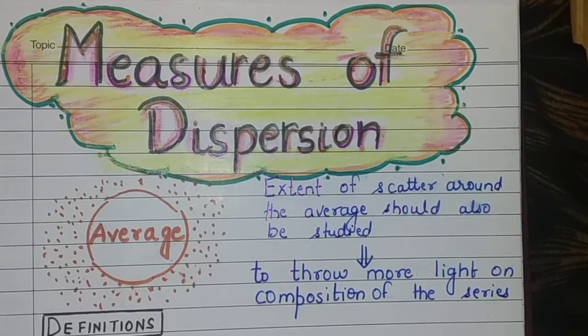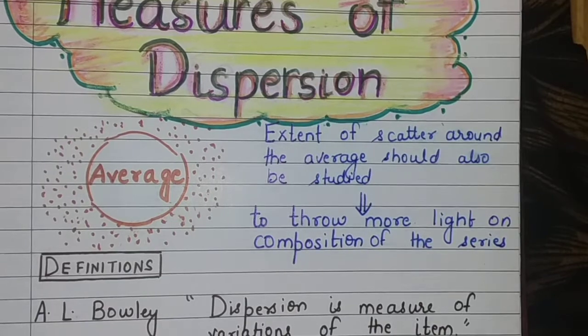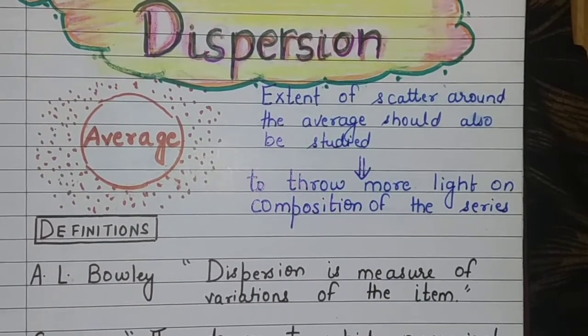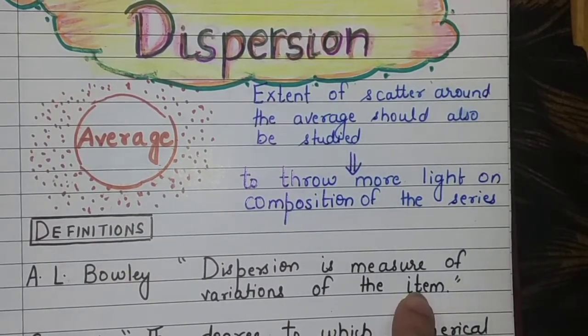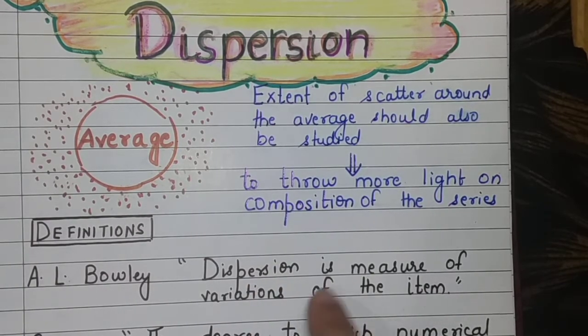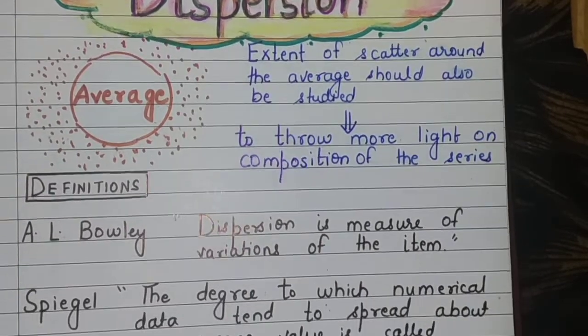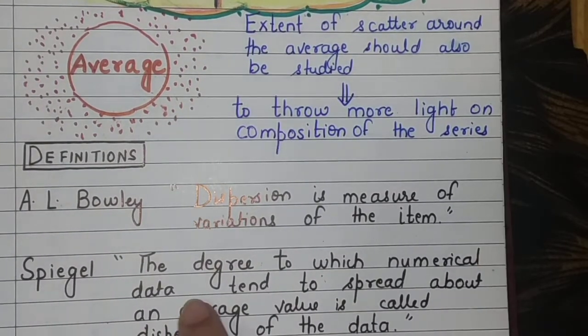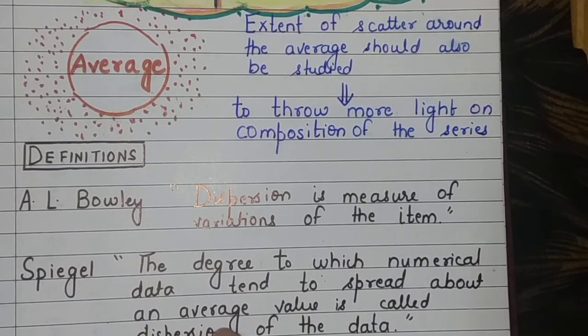Now, what are the definitions of dispersion? As per Al-Baulay, dispersion is the measure of the variations of the item. According to Spiegel, the degree to which the numerical data tends to spread about an average value is called dispersion of the data.